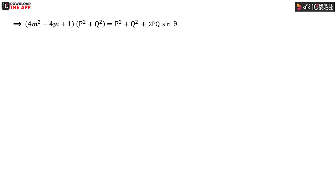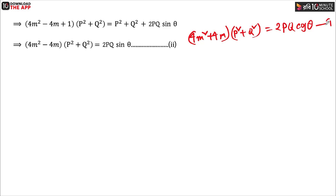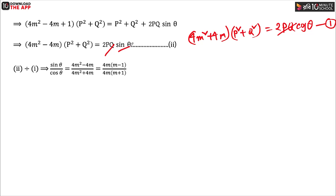Finally, we have to give this 4m square minus 4m plus 1 into p square plus q square equal to p square plus q square plus 2pq sine theta. We have to give this 4m square minus 4m into p square plus q square equal to 2pq sine theta.